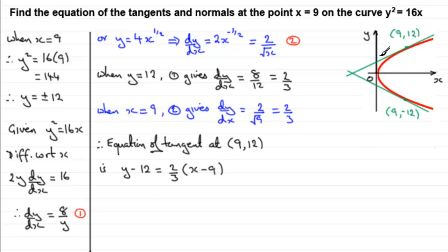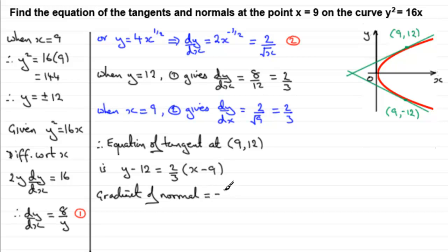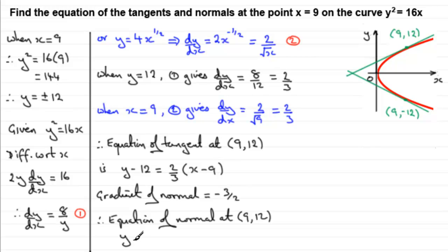When it comes to the equation of the normal, I need to get the gradient of the normal, which is the negative reciprocal of the tangent gradient. The tangent gradient was 2 thirds, so the gradient of the normal is minus 3 over 2. The equation of the normal at (9, 12) is therefore y minus 12 equals minus 3 over 2 multiplied by (x minus 9).